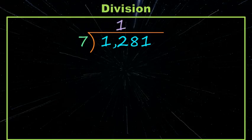That number goes above the two. Then we multiply the seven and the one, which gives us seven and that goes under the twelve. Then we subtract, which gives us five and we bring down the eight. Are you with me so far? Great.